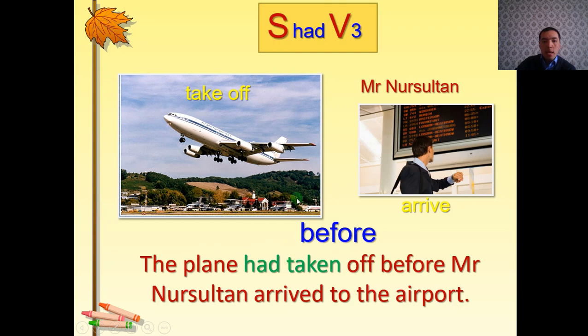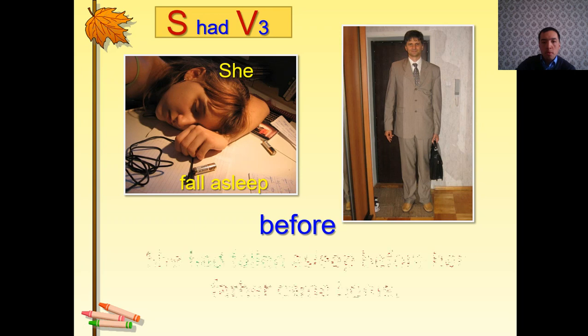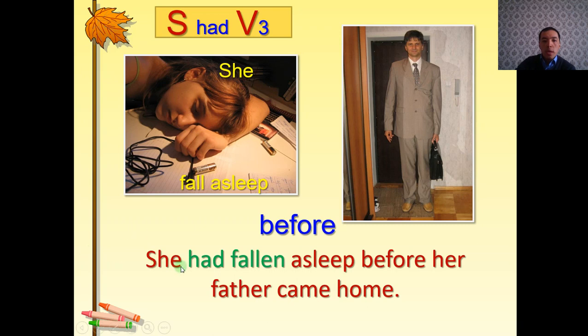The plane had taken off, first event, and arrived is the second event. Okay, she had fallen asleep before her father came home. Had fallen is the past perfect, first event, and came, second.